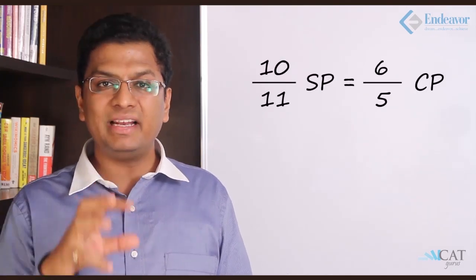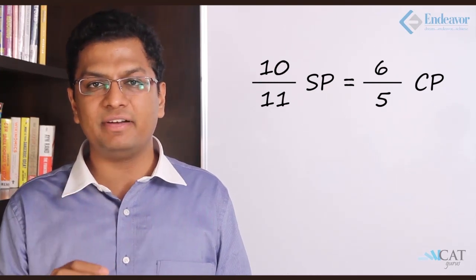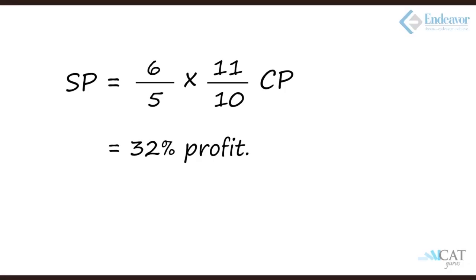Let's solve it now. 10/11 × SP = 6/5 × CP. So SP = 6/5 × 11/10 × CP, which is 32% profit. We can see how the profit increased after adulteration - the profit increased by 12% whereas the adulteration was only 10%, so there's a cumulative increase.